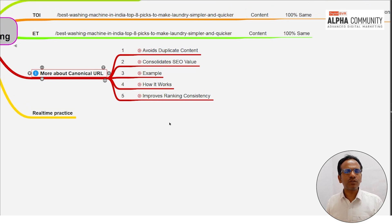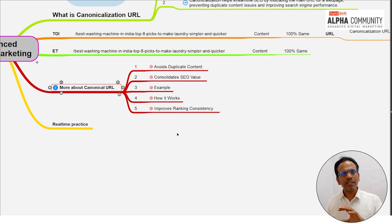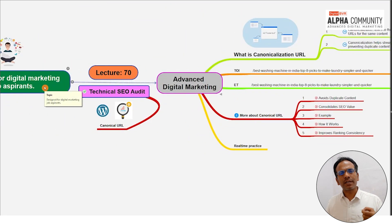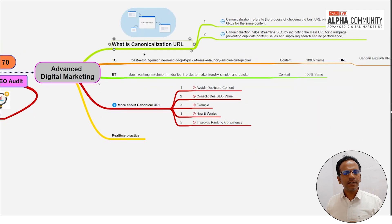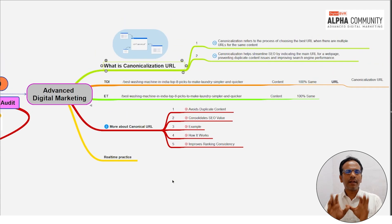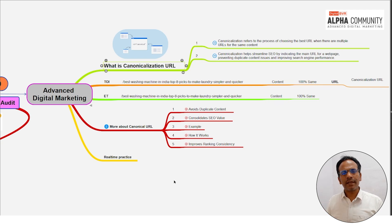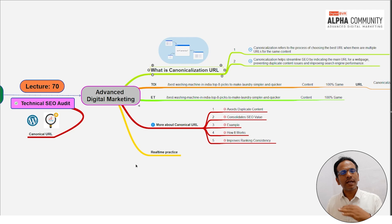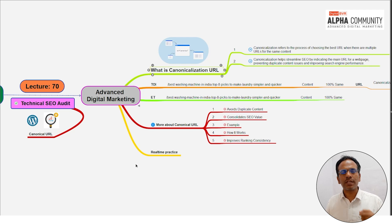For two to five years of SEO experience, this depth of knowledge is important. For job interviews, you need to be able to answer: what is canonicalization, how is it helpful for website ranking, and how can we create a canonical URL? With a minimum of six months of digital marketing experience, you should be able to explain the concept and execute it as well.